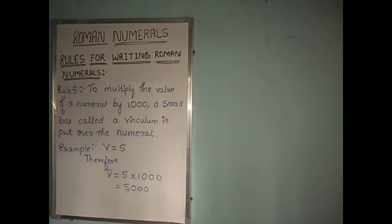What is the 5th rule? To multiply the value of a numeral by 1000, a small bar called a vinculum is put over the numeral.